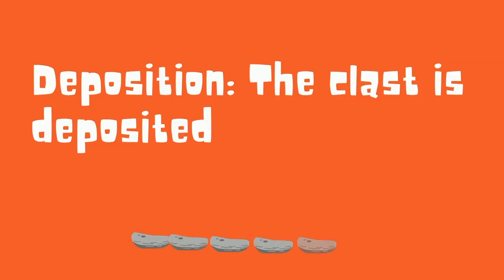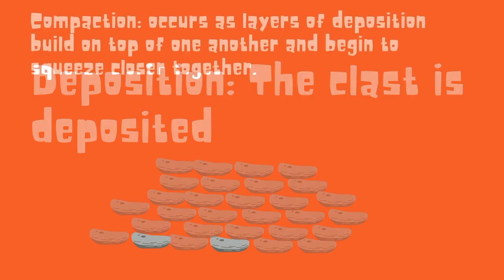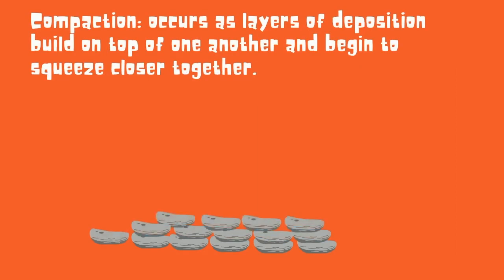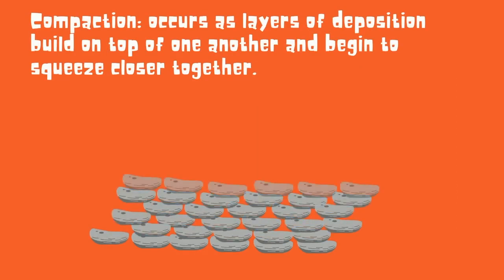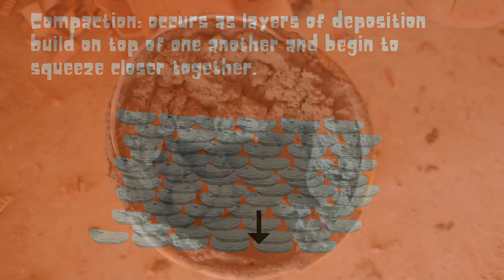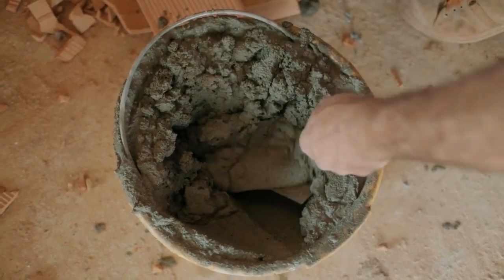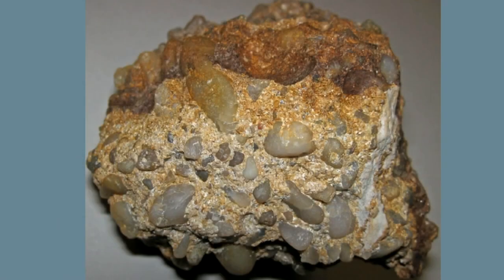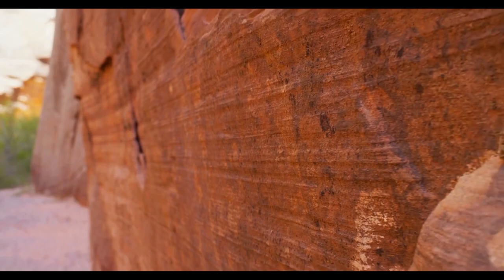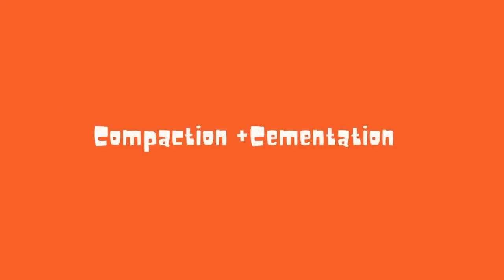Deposition is when the particles are deposited as loose sediment, usually near a body of water, but not always. Over time, compaction occurs as layers of deposition build on top of one another and begin to squeeze together. Cementation occurs eventually when the minerals in the water act like glue and cement all the pieces together. This process of loose sediment hardening into rock by cementation and compaction collectively is called lithification.